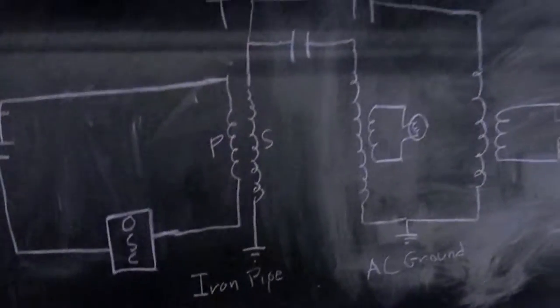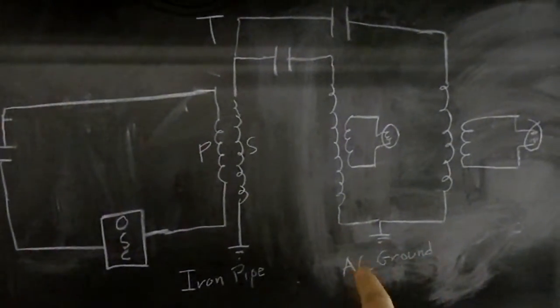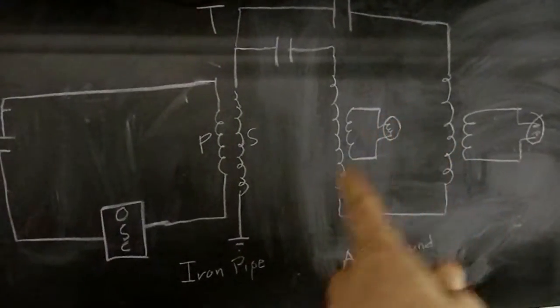This is the schematic. Each secondary of the receivers have a separate capacitance coming off the driving secondary.